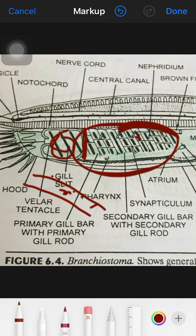These gill slits connect the pharynx with the perifaryngeal cavity, that is the atrium. Due to the presence of these gill slits, the pharynx is also called the branchial basket.